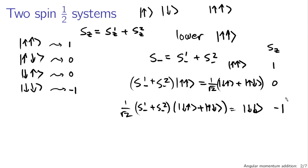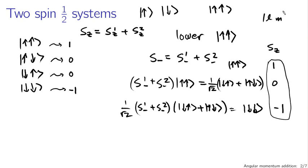So now we're talking — we have three states with z components of angular momentum one, zero, and minus one. This looks a lot like total angular momentum of one; it looks like we're talking about states |l,m⟩ of 1,+1 and 1,0 and 1,−1 for m. Typical angular momentum — a spin one state, if you want to think about it that way.